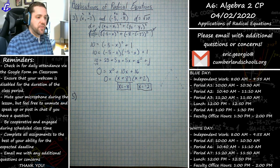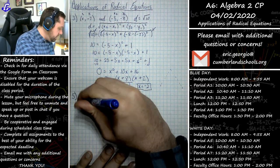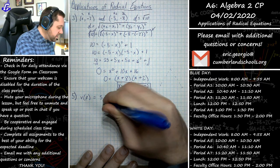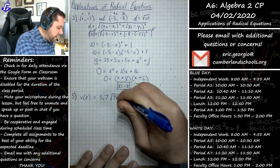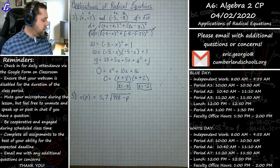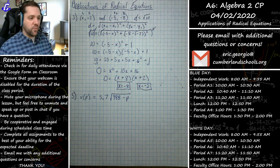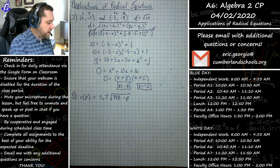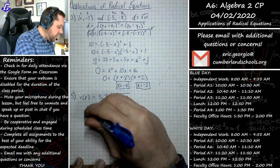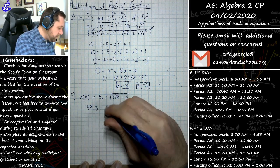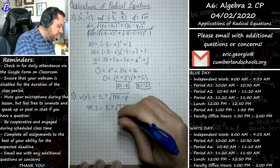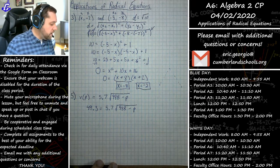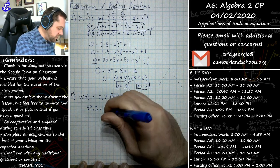Problem five says: in a thunderstorm, the wind velocity v(p) in meters per second is described by v(p) = 5.7 times the square root of (998 minus p), where p represents air pressure in millibars. We're asked: what is the air pressure of a thunderstorm in which the wind's velocity is 49.3 meters per second? We plug in 49.3 and solve for p.